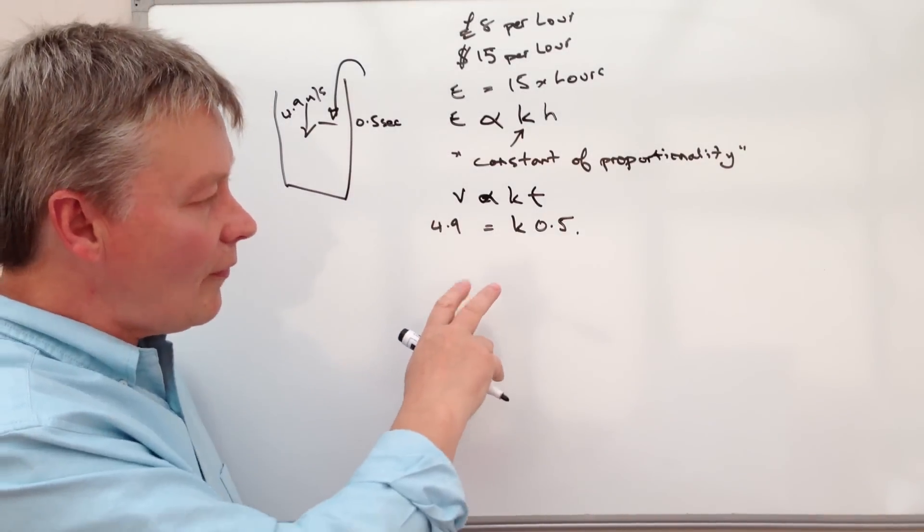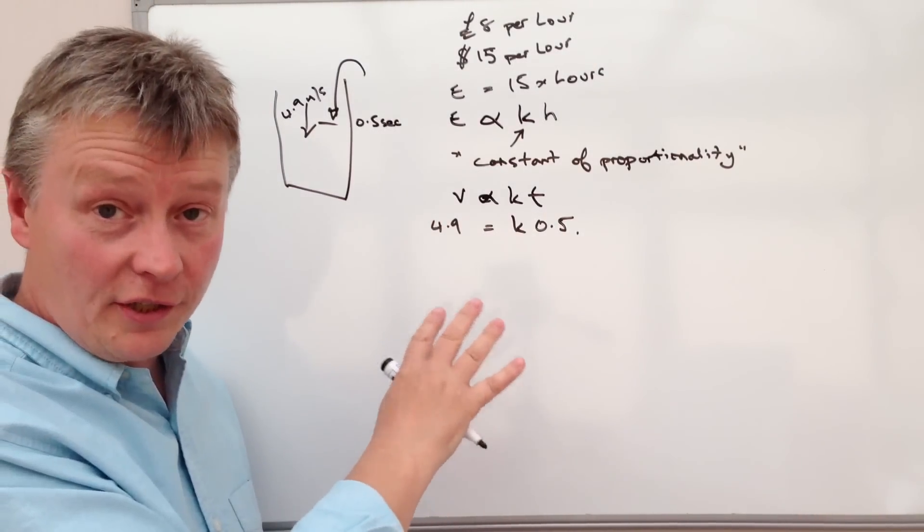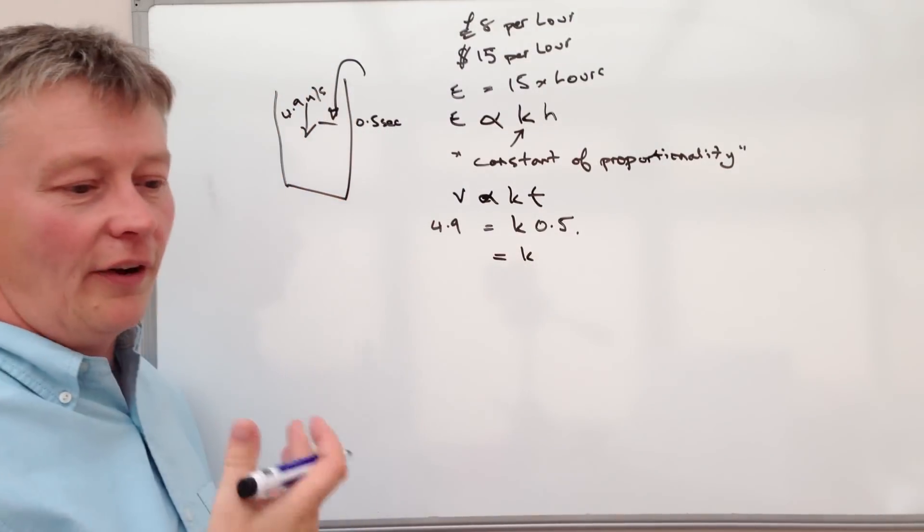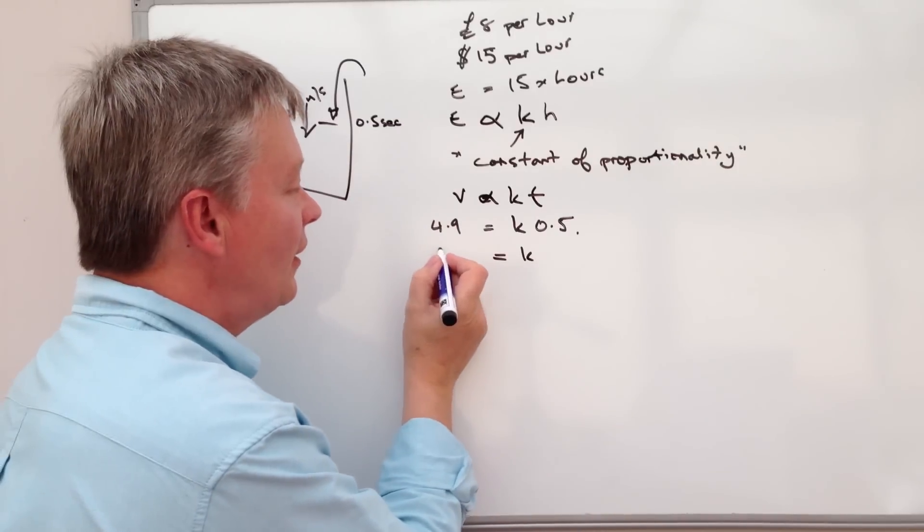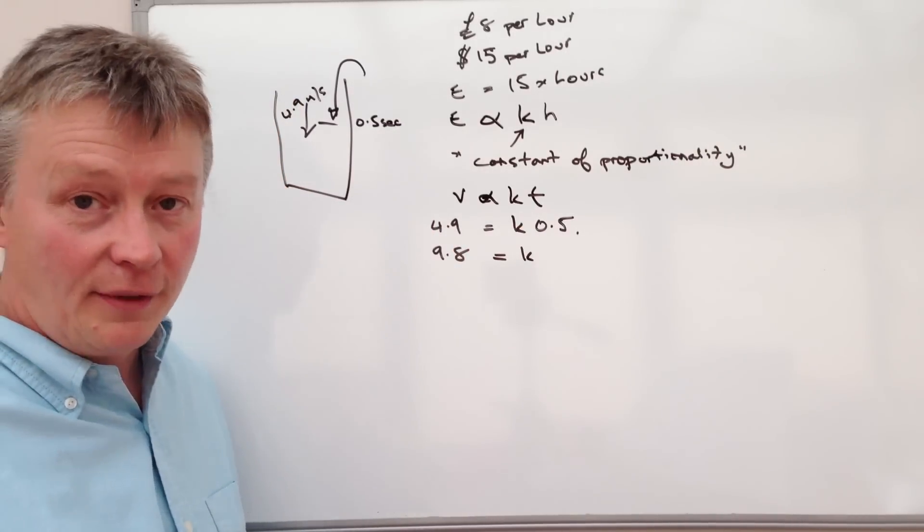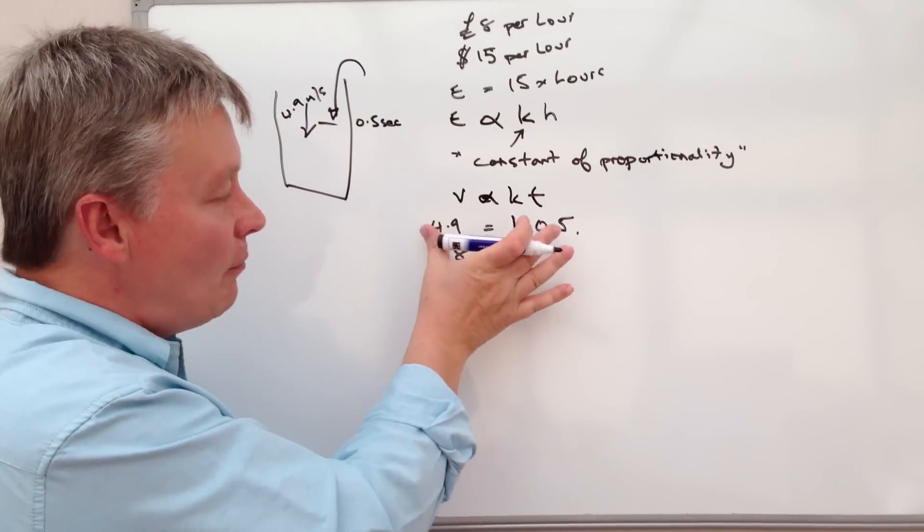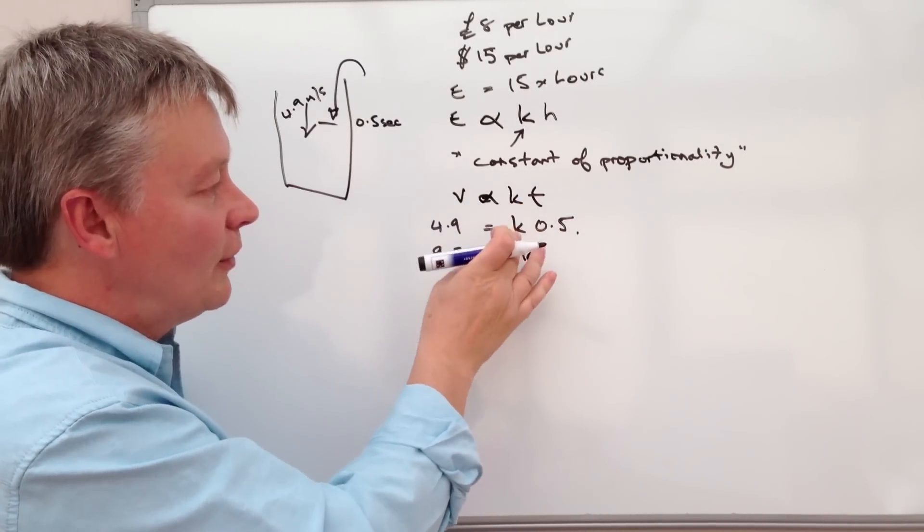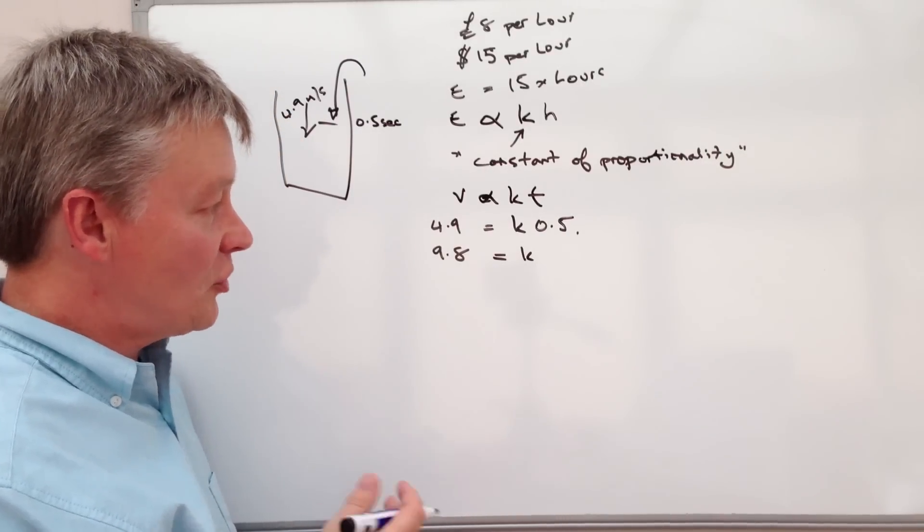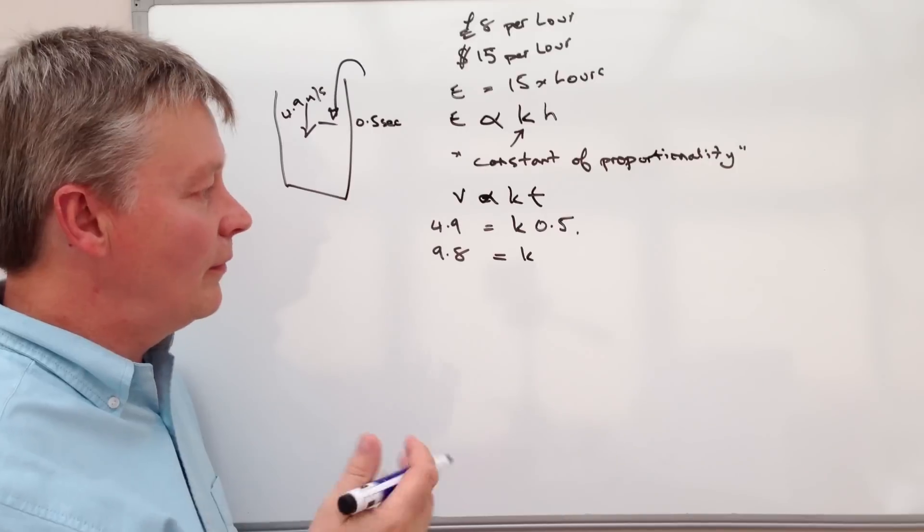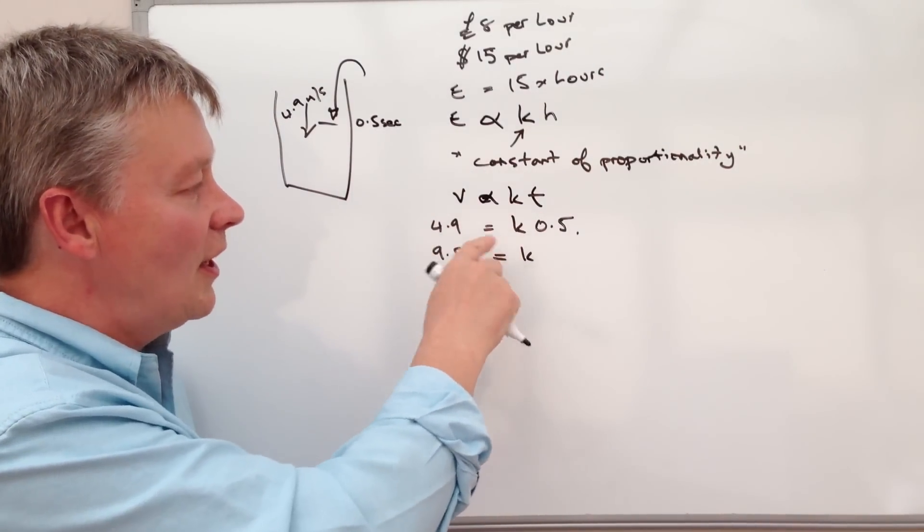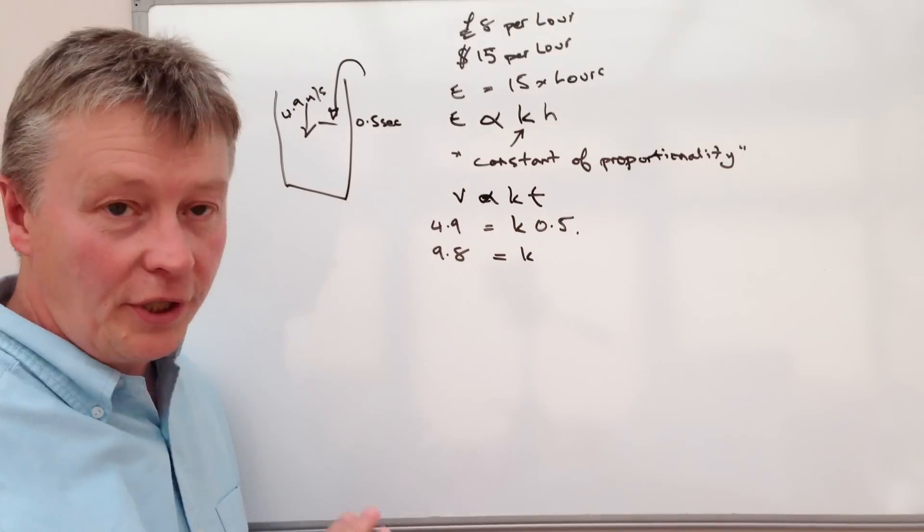So in other words, we need to use this information to find out the value of K. And if you put that into a calculator, that will give you a value of K as 9.8. So in other words, it's 4.9 divided by 0.5. So at that moment, the value of K is 9.8, which is constant. And actually, that's true because the acceleration due to gravity is 9.8 metres per second squared. So those numbers that have been used are very accurate.